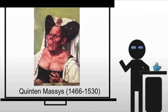Quentin Massais is going to be Antwerp's leading master after about 1510, and he will be attracted by Antwerp's growing prominence. We tend to see artists attracted to areas that have money, because the patrons need to be able to commission you, and most artists want more than exposure.